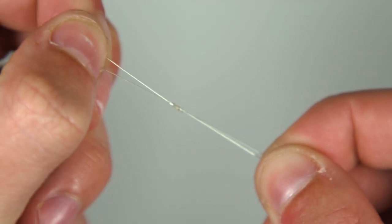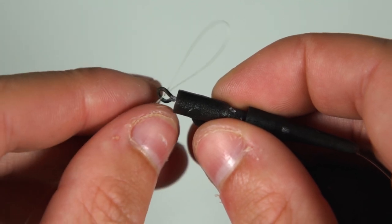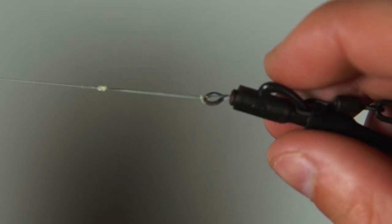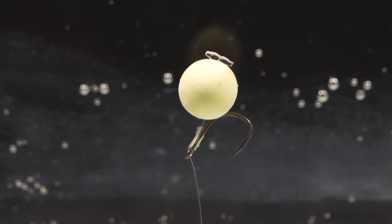To attach the loop to the swivel on the lead clip, simply thread the loop through the hole in the swivel before passing the rest of the zig rig through the same loop and pull it down tight. Your zig rig is now complete.